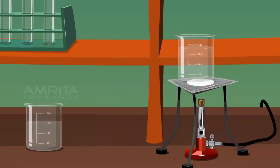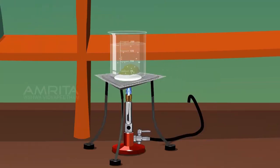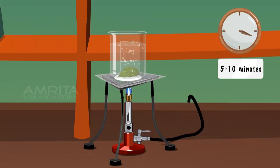Take a beaker containing distilled water, place it over a Bunsen burner and boil it. Put the experimental leaf into the boiling water and boil for 5-10 minutes till the leaf becomes soft.